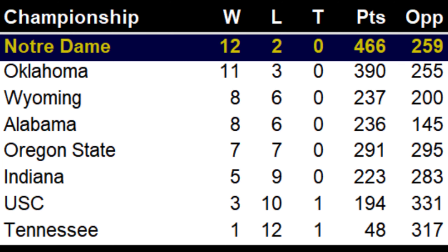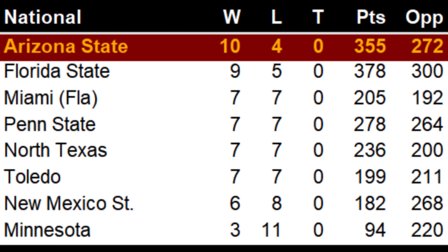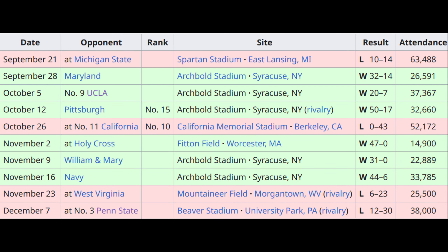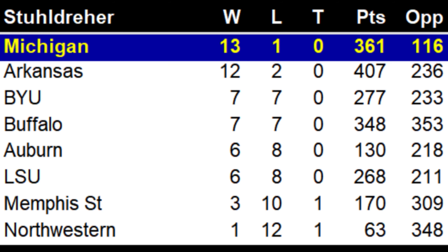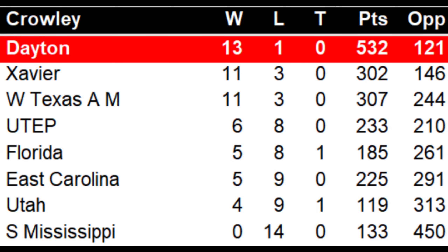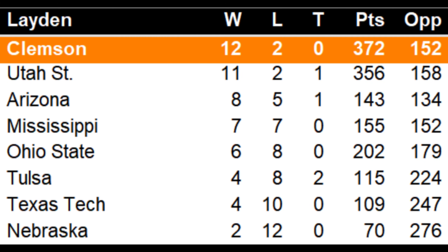Tennessee were relegated from the championship league after a really bad season — they only scored 48 points all year. Minnesota and Syracuse were relegated to the third rung. Syracuse lost all 14 games and only scored 16 points all season; they looked like they didn't even belong in this league. Northwestern will have to play before the 1969 season to stay in the project. Michigan State will as well — they had a worse season than Navy, believe it or not. Southern Mississippi lost all 14 games and will also face an elimination game. And Nebraska, who went 6-4 in real life, won only twice and will have to play for their lives.